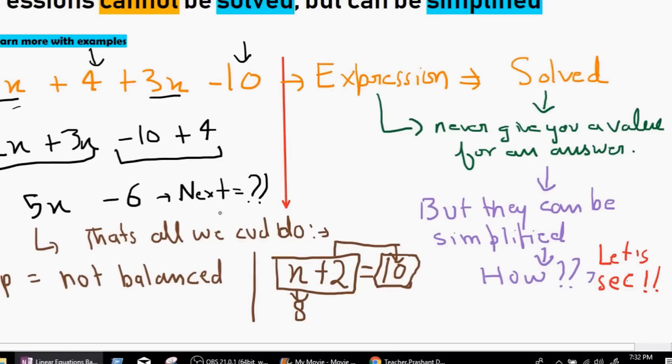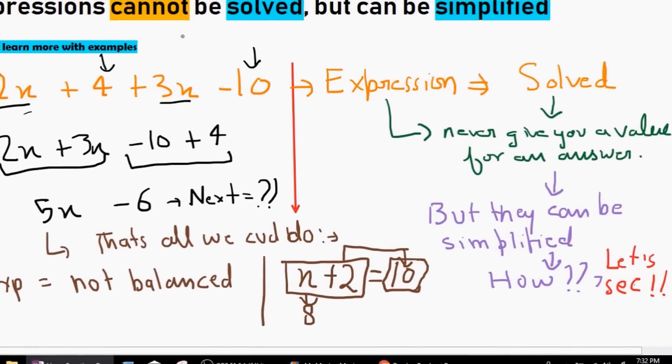But what we can do is simplify them. Simplifying them basically means make them shorter. Now, as you can see, we had two terms, x and x, and we had two constant terms, 10 and 4. What we did is we simplified these two like terms into one term and these two set of like terms into one term. So from four terms, we went to two terms. That's called simplification. And that's all we could do because we don't know what represent this expression on the other side, which is called equation. And equations we are going to be learning in our next video. So, as we know, expression cannot be solved, but they can be simplified.